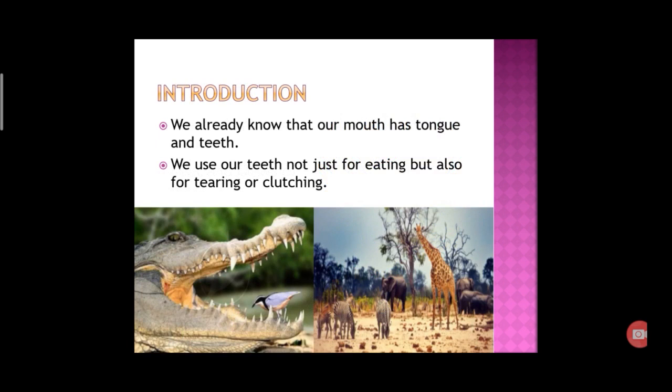As we know, food is very important for everyone. While eating food, living organisms intake the food item and they cut and chew the food so that it can easily be digested. In this process, tongue and teeth help the animals, which are present in the mouth. The meaning of tearing is to pull pieces off, and the meaning of clutching is to hold.